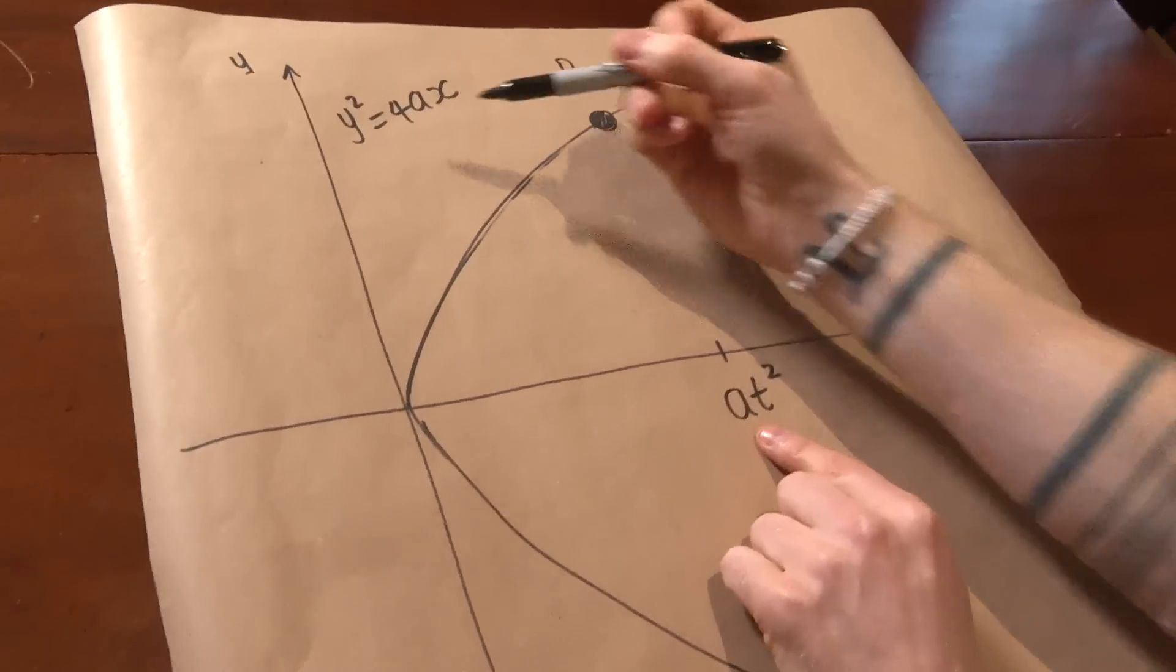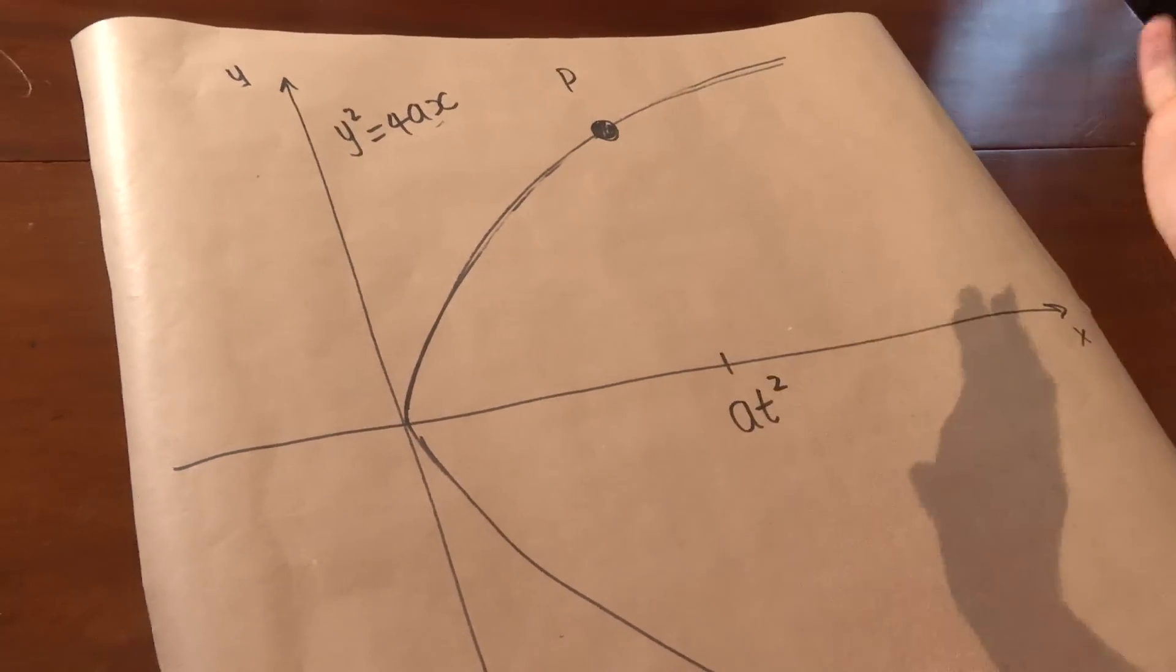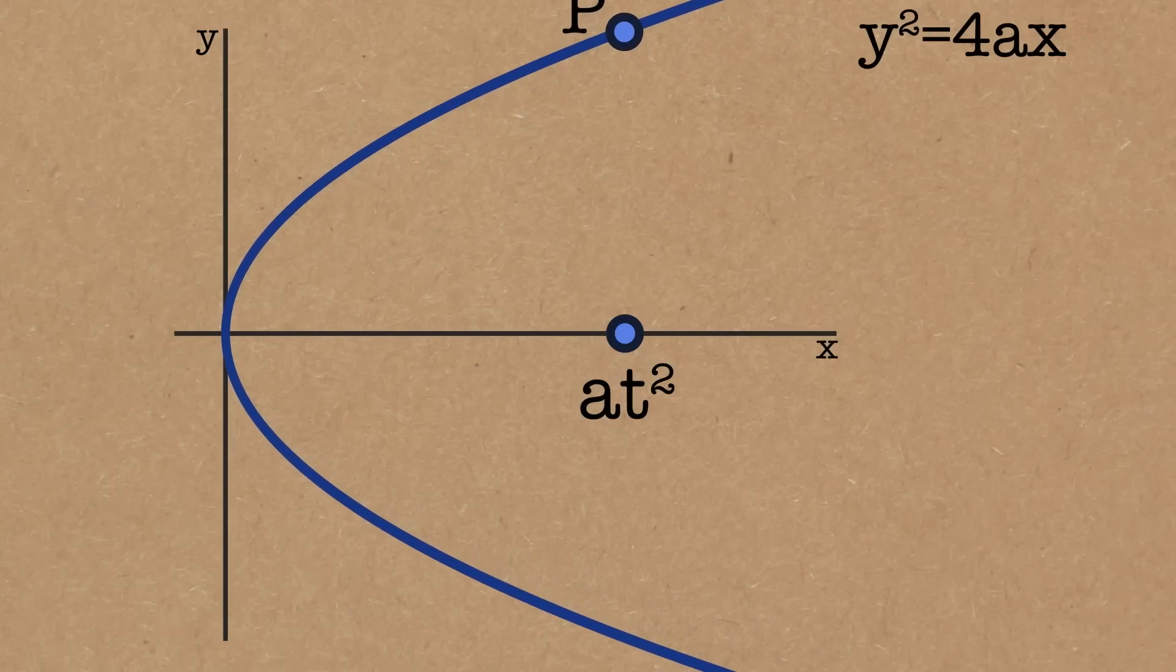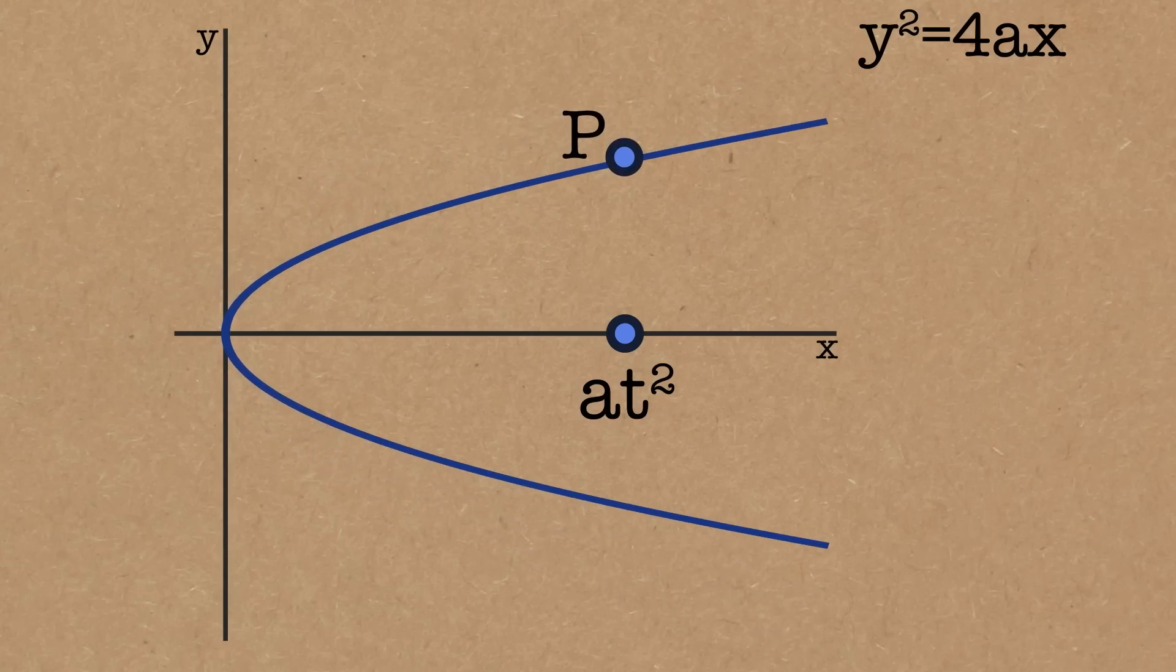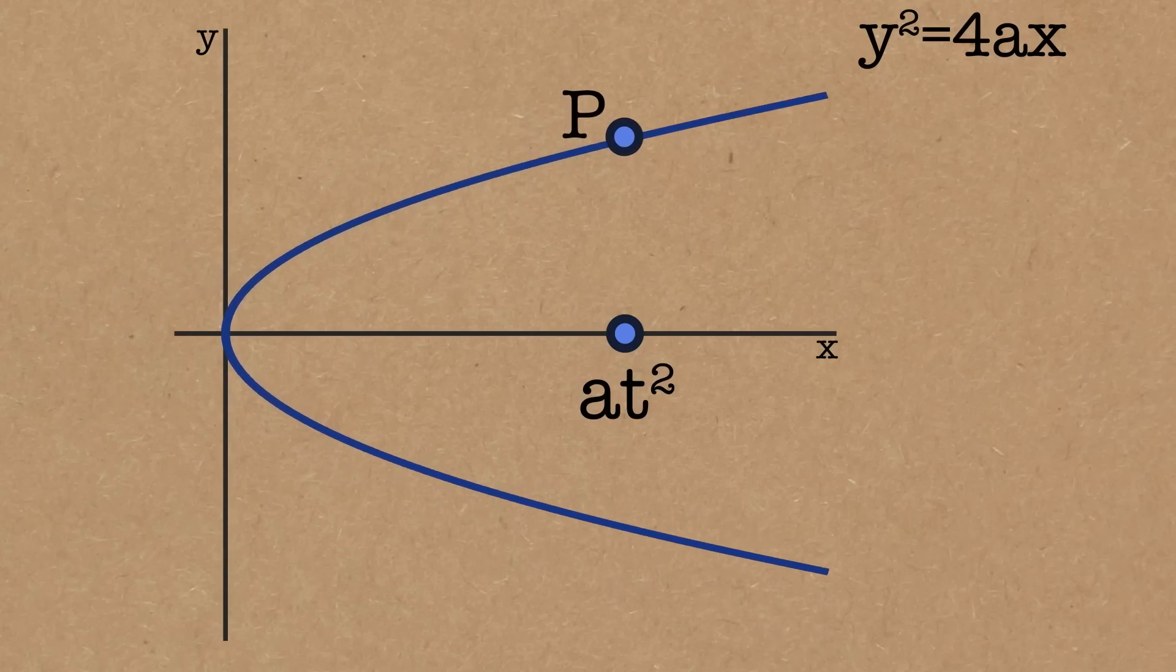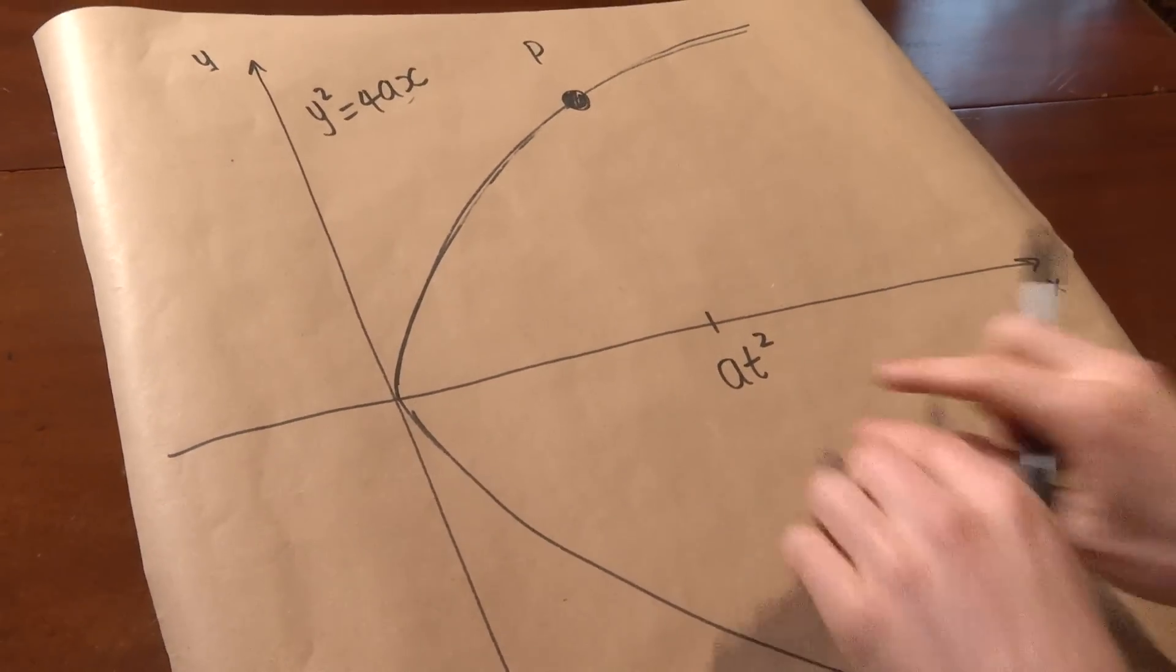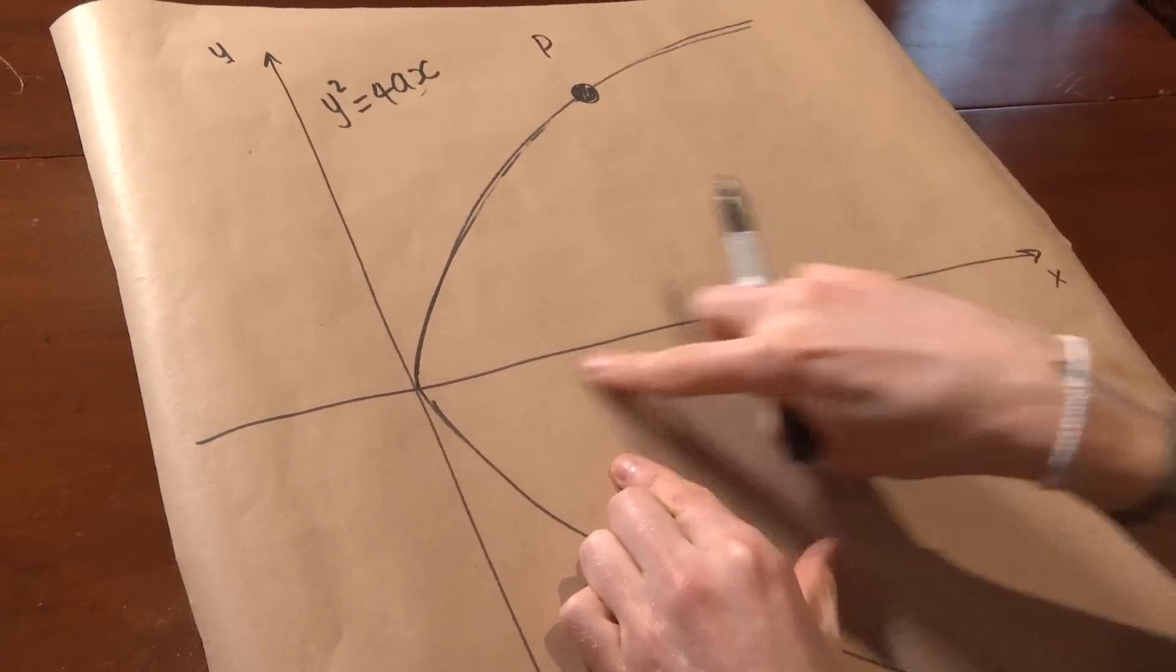Now a is important because a here is controlling how steep the parabola is, so as we make a bigger these become steeper, closer, and as we make a smaller these become narrower. So a just controls the shape, so we're covering all possible parabolas by including it. Of course we could just set it to one, but let's be general. And then t, as we increase and decrease t we slide up and down the x-axis.